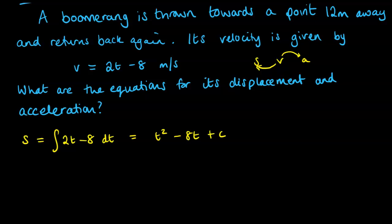Now that constant we can work out with the other little bit of information that you may not have picked up on, but this bit here, we're told that that fixed point is 12 meters away. That gives us some information to work out the constant.